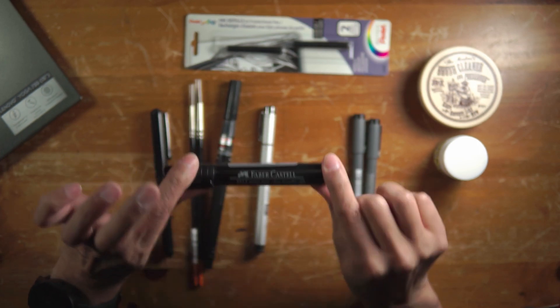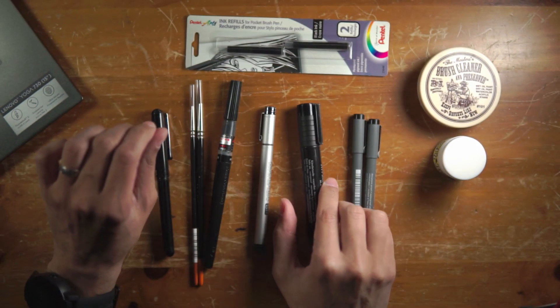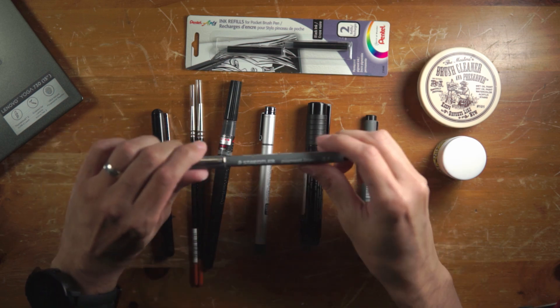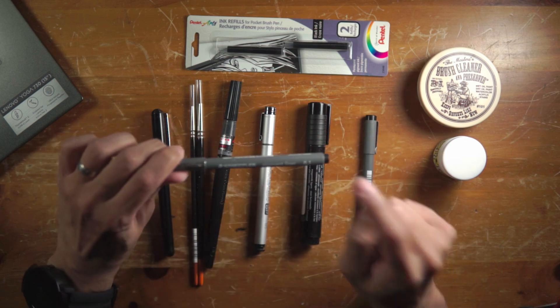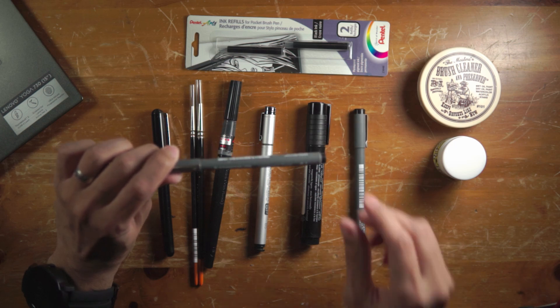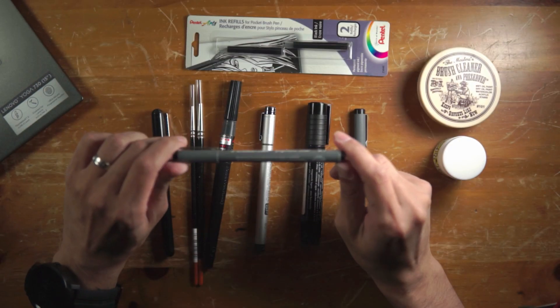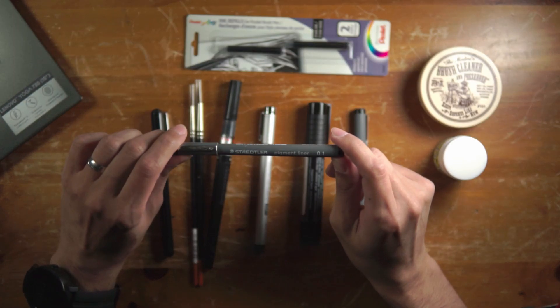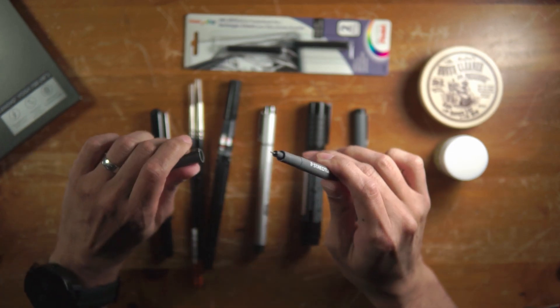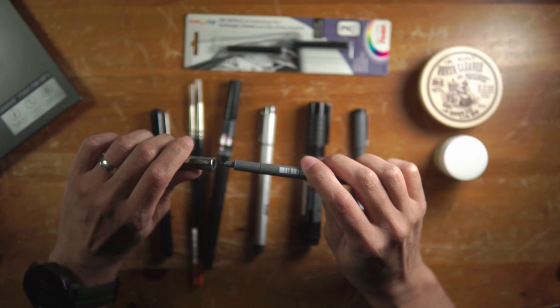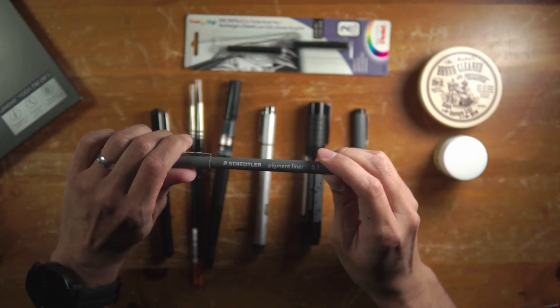Next up are these Staedtler pigment liners. I have a number one here and I believe this is a 0.5, but I have a whole set of them and I think they go up to 0.7 if I'm not mistaken. And basically these are just pens. You really can't get much variation in lines with these pens.